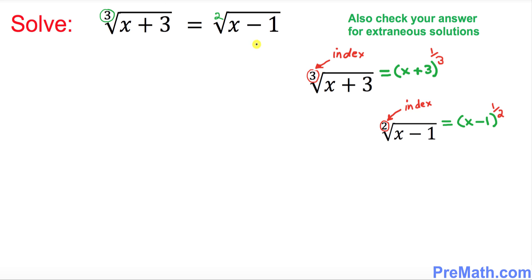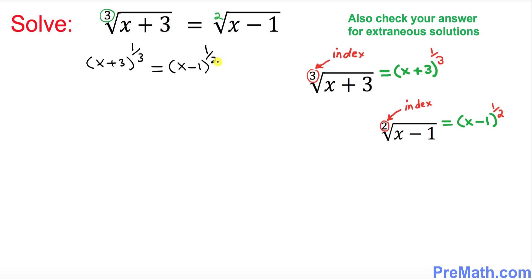So let's go ahead and put these radicals in terms of exponents. The left hand side is going to become x plus 3 to the power 1 over 3, and the right hand side can be written as x minus 1 to the power 1 over 2. Now we want to manipulate this a little bit.